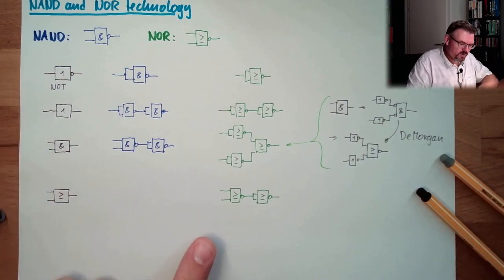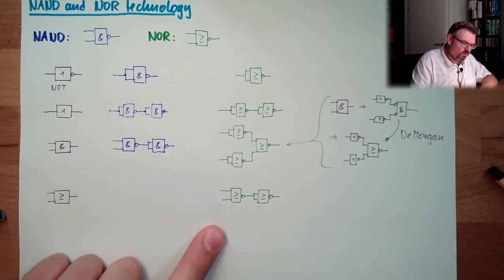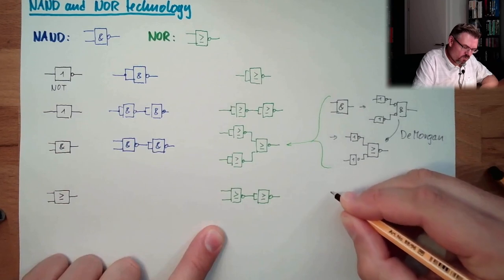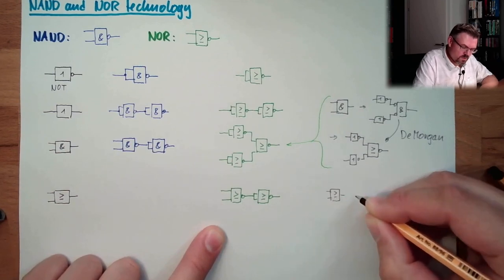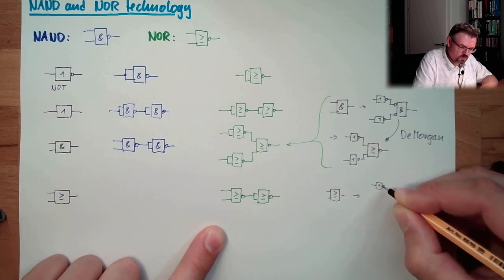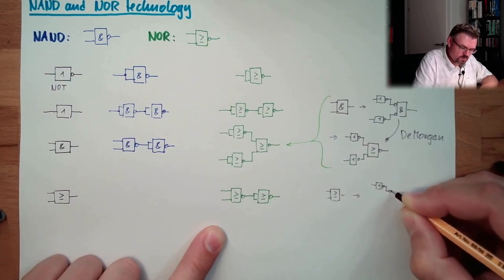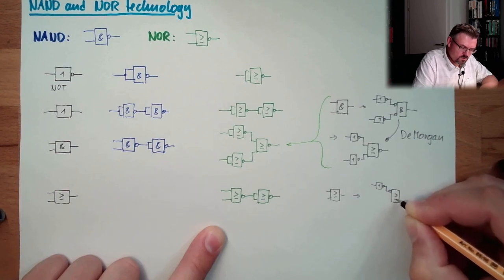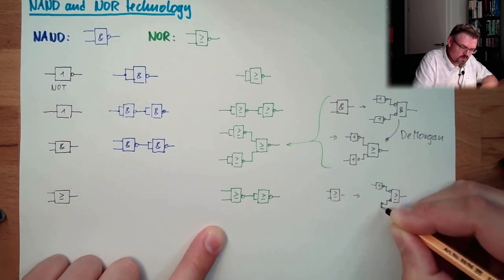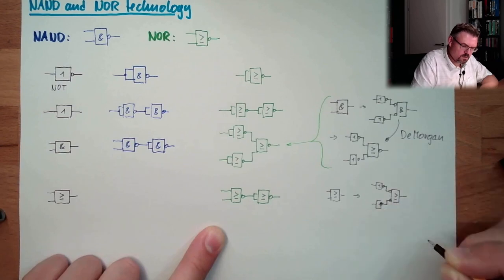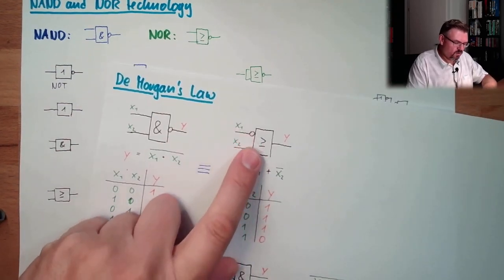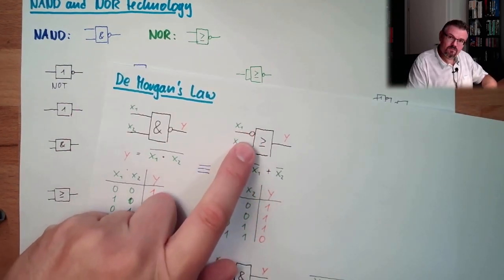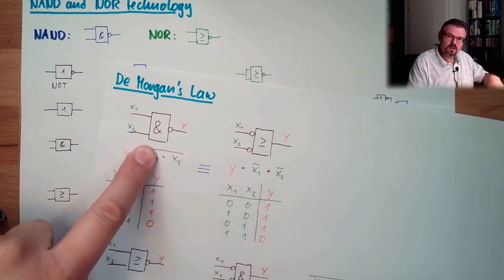And now, we do exactly the same, but with an OR. We say, an OR is exactly the same as I would use two NOTs. And then, rule of the Morgan, okay, rule of the Morgan, an OR with two inverted inputs is a NAND.